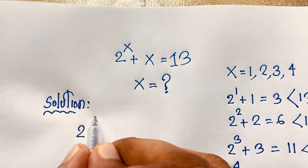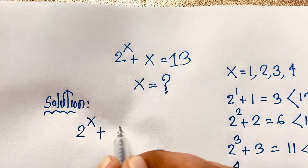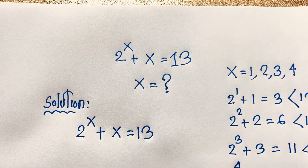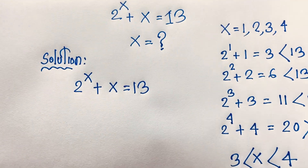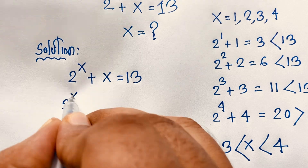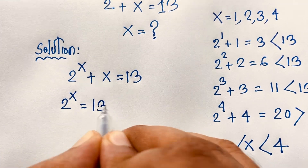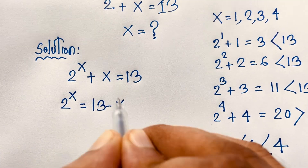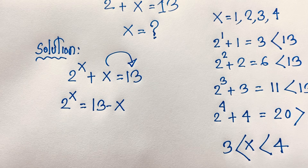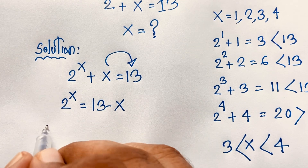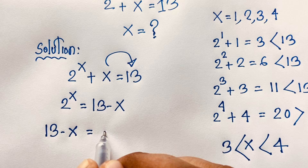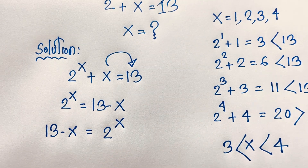Now for the formal solution: 2 to the power x plus x is equal to 13. I rearrange so that 2 to the power x is equal to 13 minus x. I just move the x to the right side, making it negative x. So 13 minus x is equal to 2 to the power x.